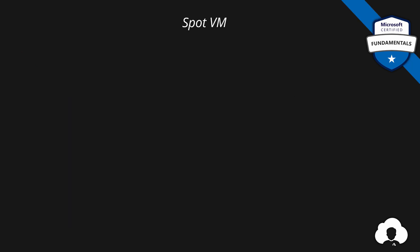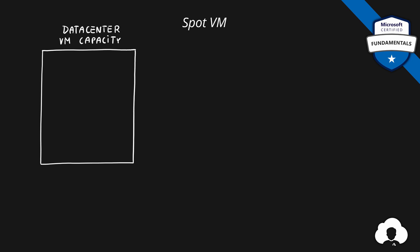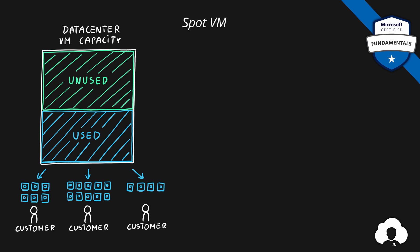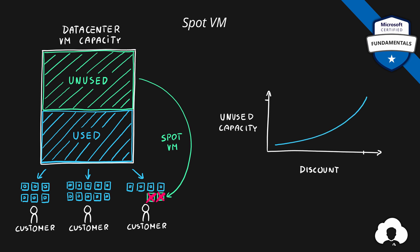Next up we have spot pricing for virtual machines. Imagine a box representing the data center capacity for virtual machines. When customers purchase VMs, part of that capacity is used, but Microsoft needs to keep a lot of unused capacity in reserve to meet growing demand and auto-scaling features. Wouldn't it be great to use that unused capacity at a discount? That's exactly what spot virtual machines are. You can buy unused capacity at a significant discount, but if Microsoft needs that capacity back, they can take it at any time. The discount varies depending on how much capacity is left.